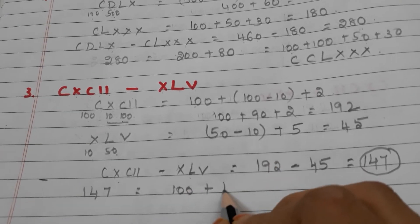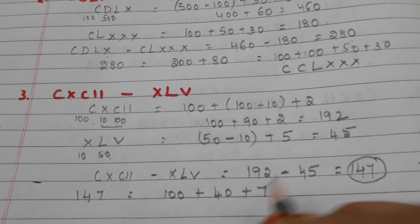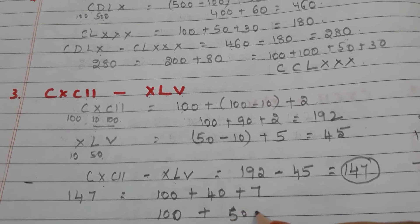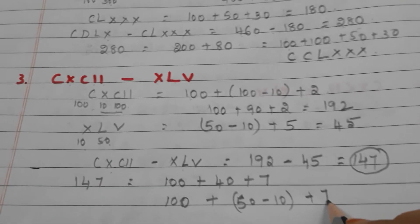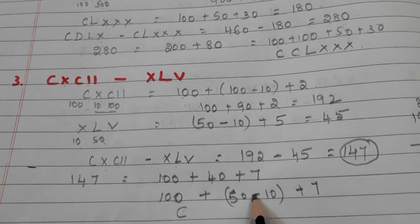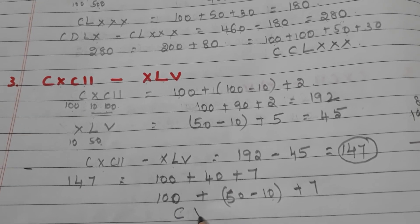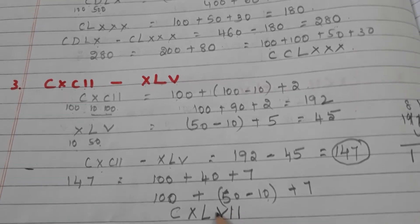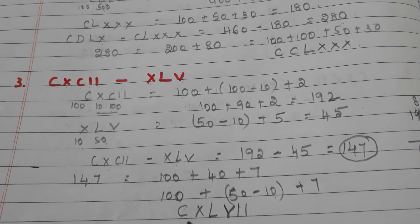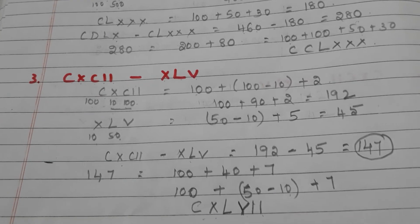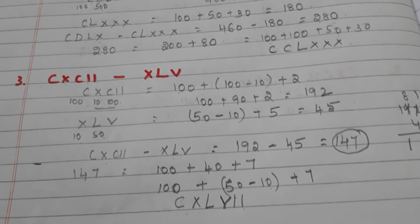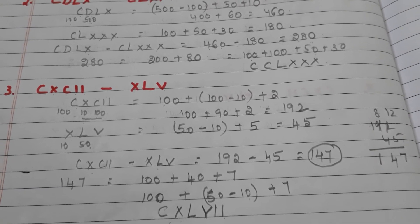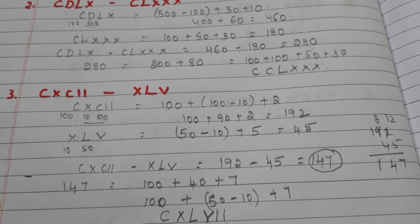We have to write 147 in Roman numerals. 147 equals 100 plus 40 plus 7. 40 can be written as 50 minus 10, so we write the smaller number X before L, giving XL. 7 means VII. So 100 means C, 40 means XL, 7 means VII, and the answer is CXLVII. That is how we subtract two Roman numerals. I hope you understand this video. If you like my video please like, share, and subscribe, and don't forget to click on the bell icon. Thank you.